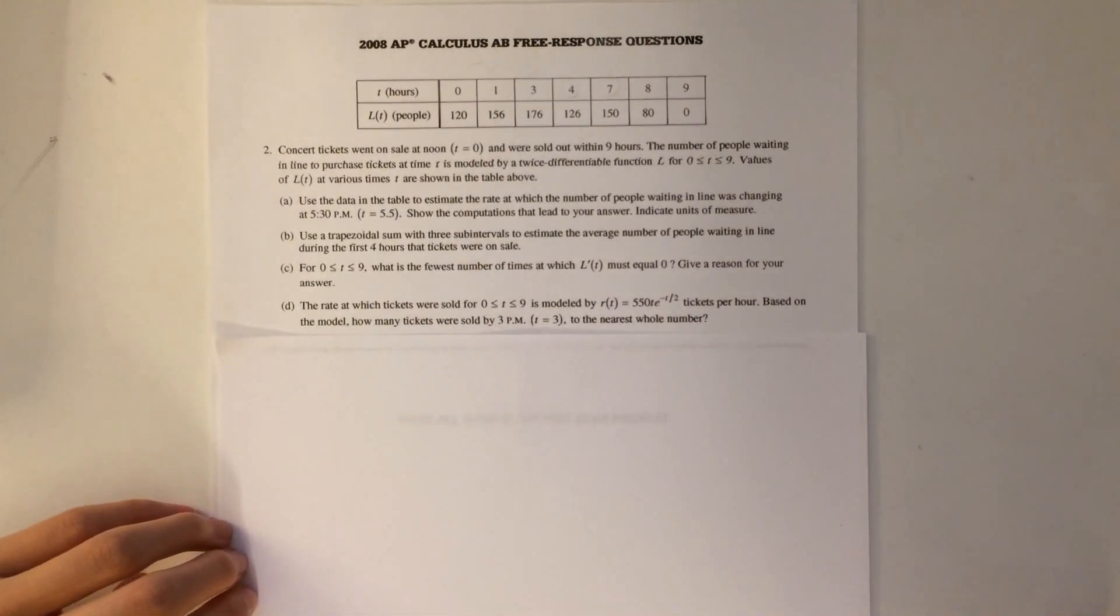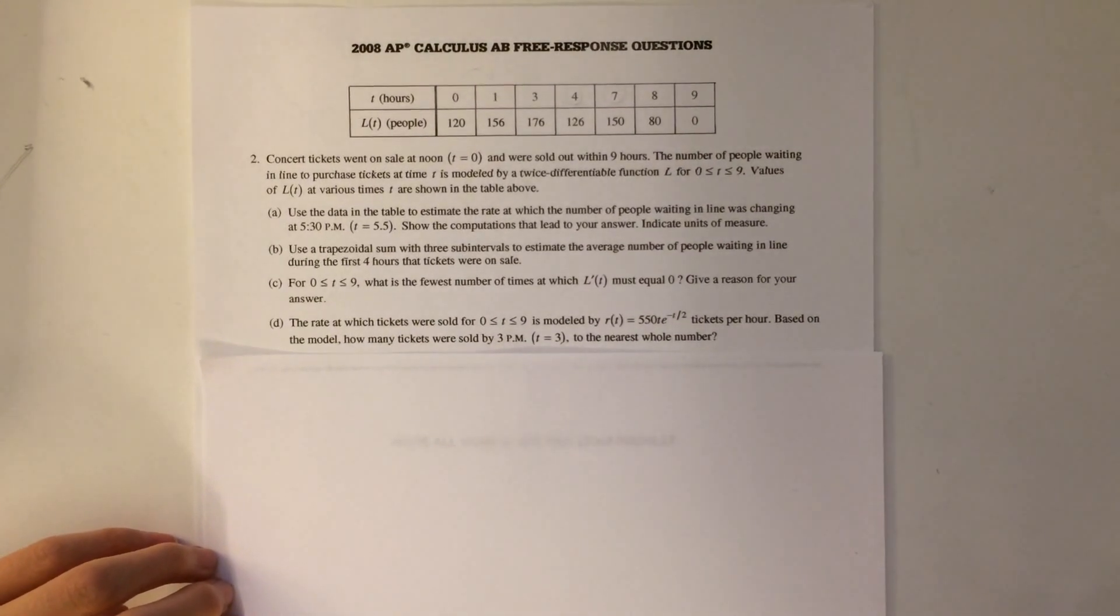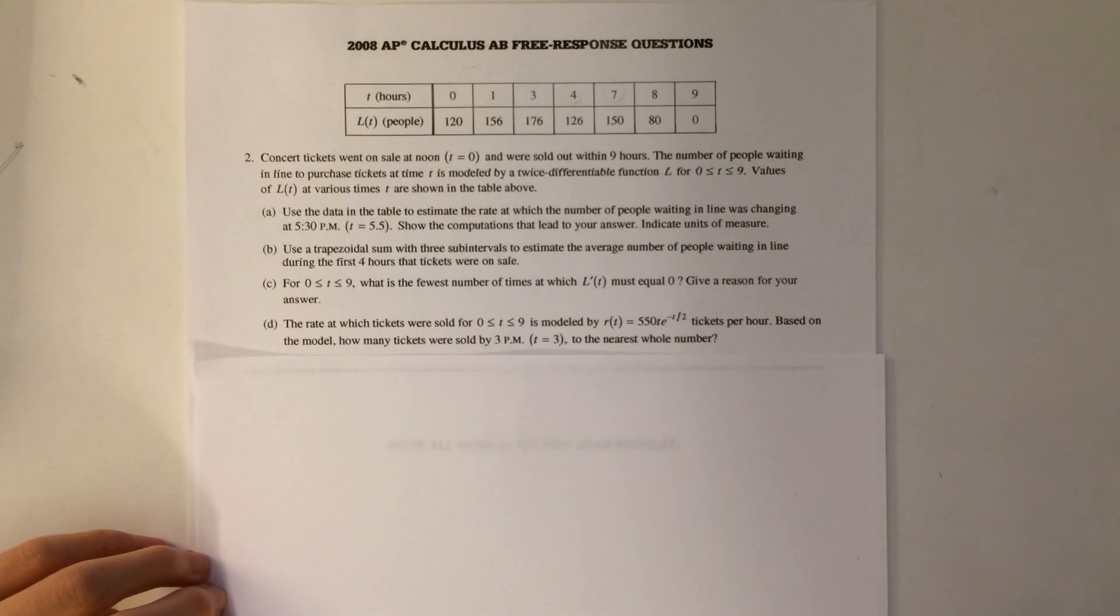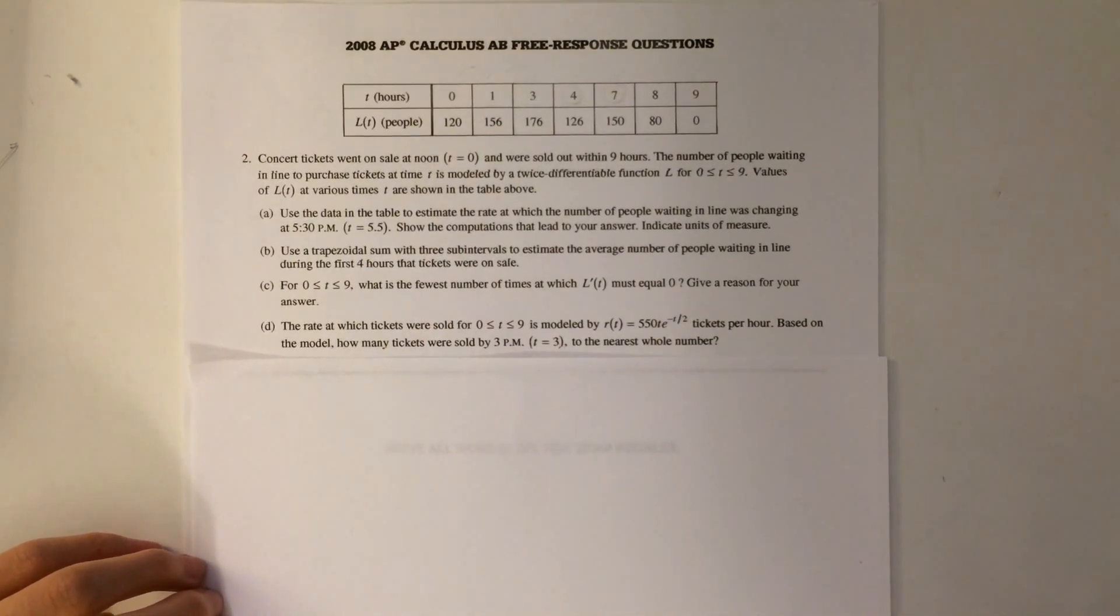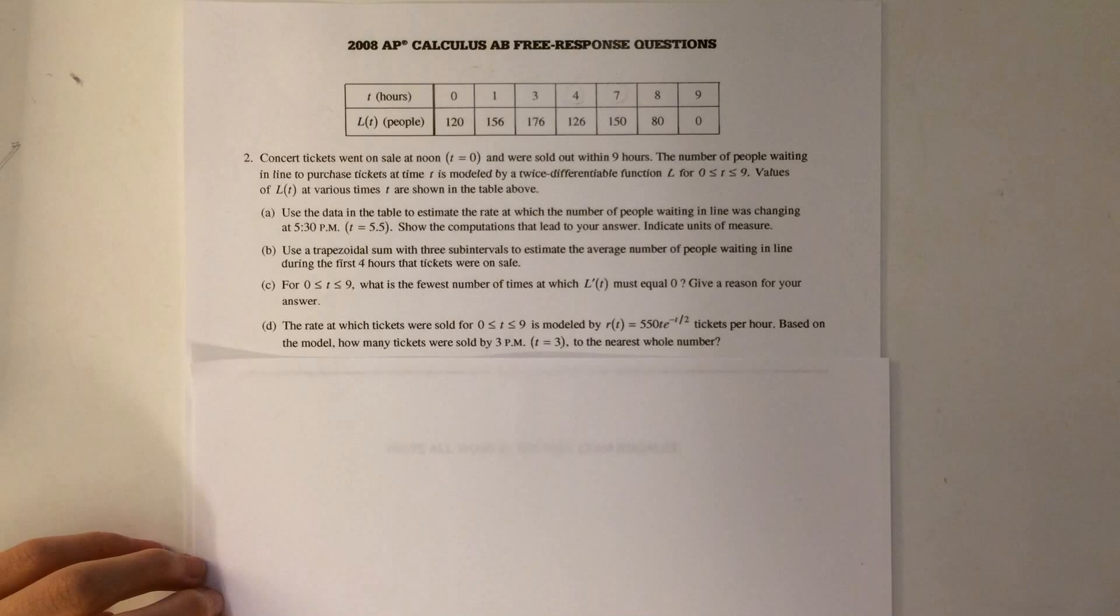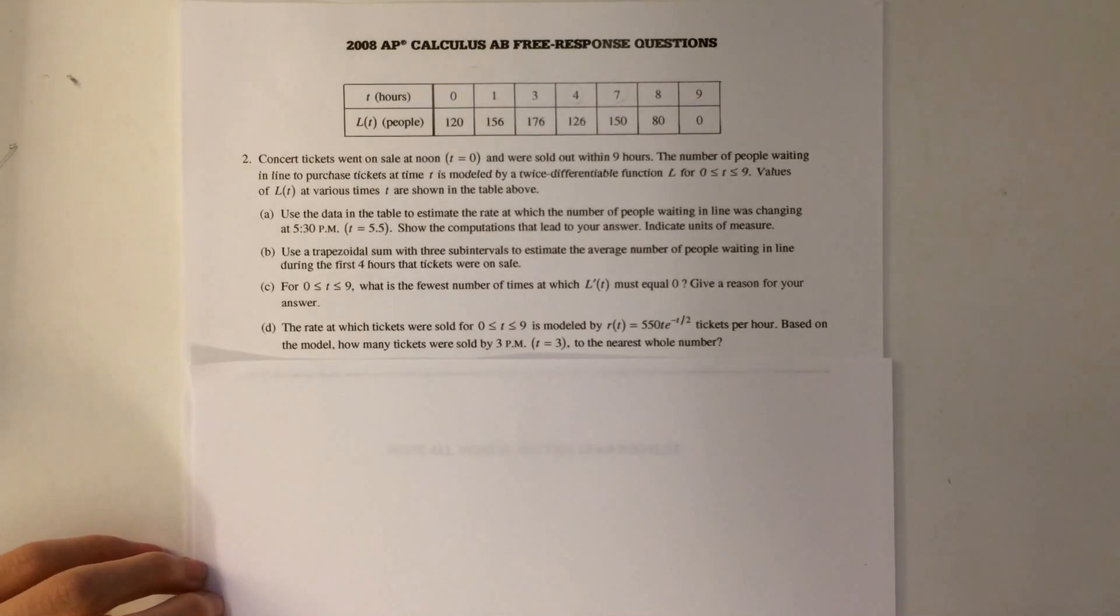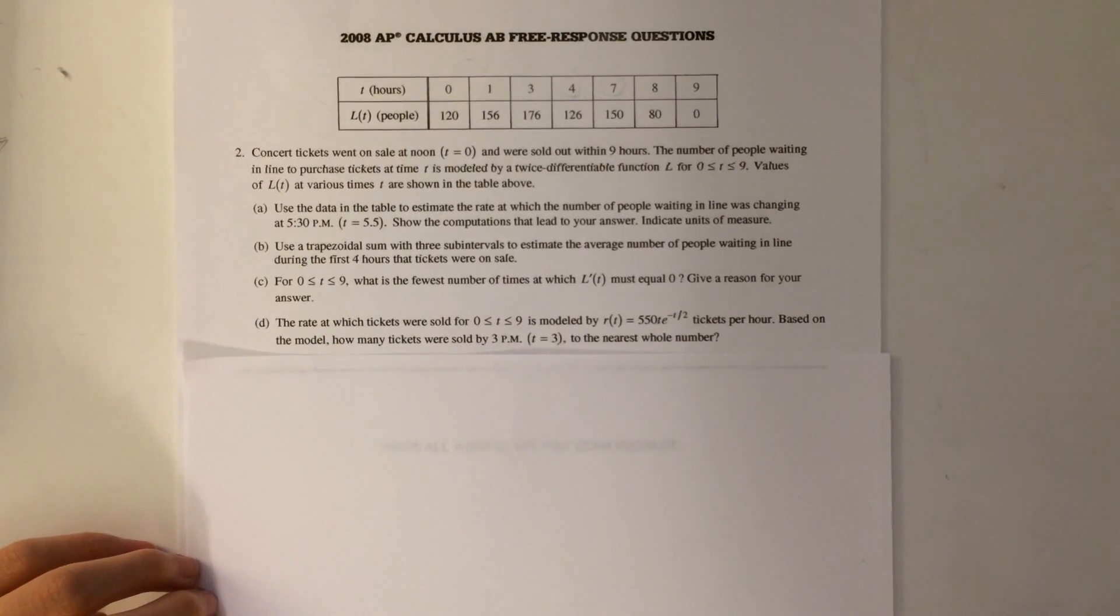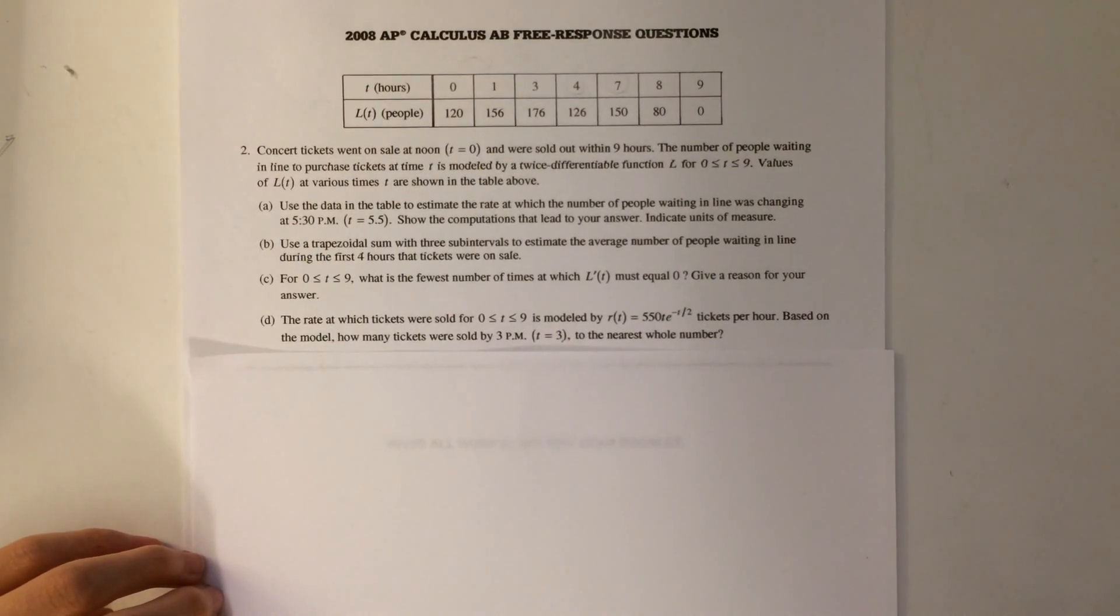Part D says, the rate at which tickets were sold for t between 0 to 9 hours is modeled by r of t equals 550 t e to the negative t over 2 tickets per hour. Based on the model, how many tickets were sold by 3 pm, t equals 3, to the nearest whole number?